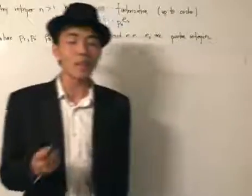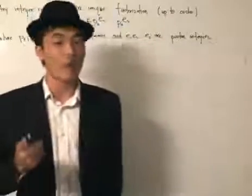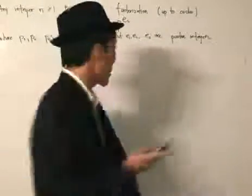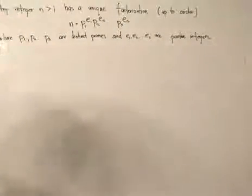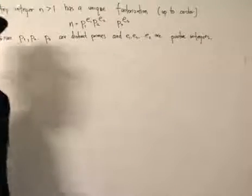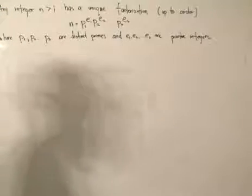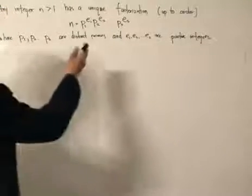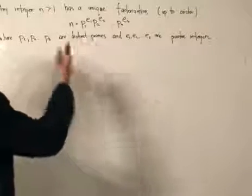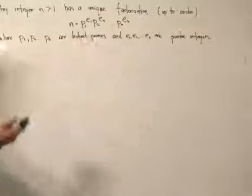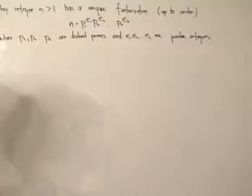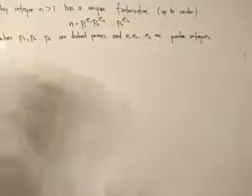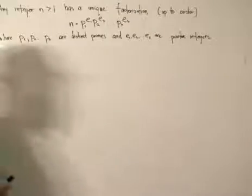That theory is called the Fundamental Theorem of Arithmetic. Any integer n greater than 1 has a unique factorization, up to the order — so the order doesn't matter — expressed as n equals p1 to the power of e1, p2 to the power of e2, all the way to ps to the power of es, where p1, p2, and ps are distinct primes, and e1, e2, and es are positive integers.